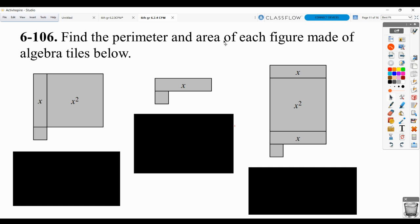You're supposed to first find the perimeter and area of each figure made by these algebra tiles. Perimeter, remember, is when we do the outside edge. Area is when we find the space that is covered inside the shape.